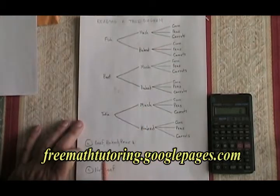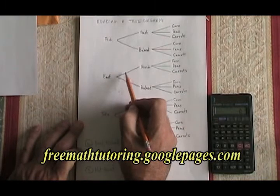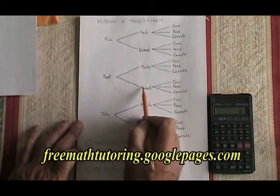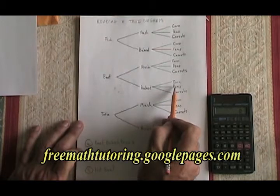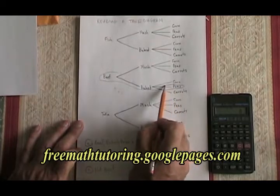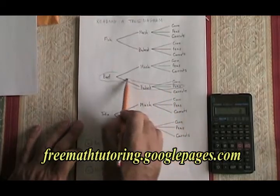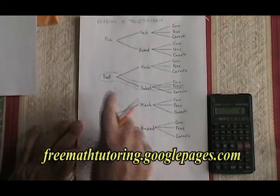The only combination that has beef with a baked potato and peas is right here — this branch going from beef to baked, and then this branch going from baked to peas. We can circle that so we can see what has been chosen. That's the only combination that has those three foods put together.